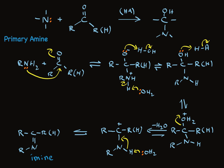Overall, you see that this mechanistic sequence transforms this pair of reactants, a primary amine and an aldehyde or ketone, to make an imine.